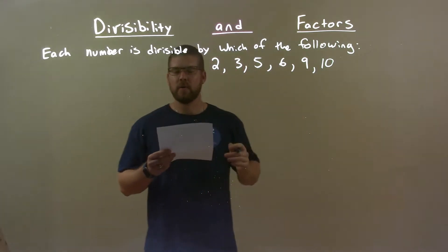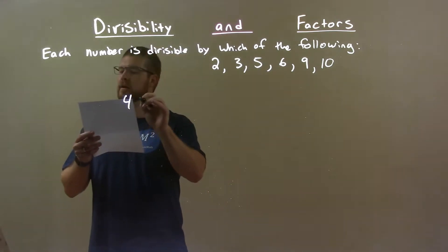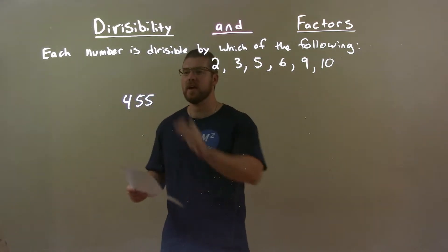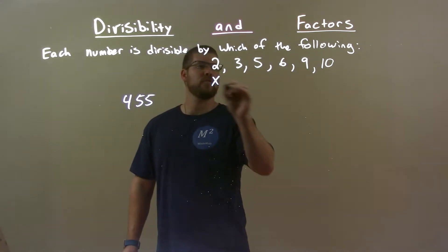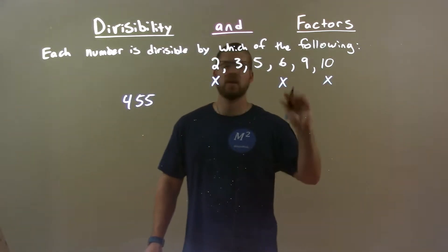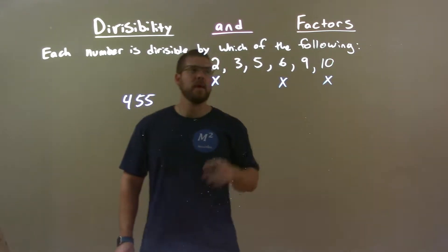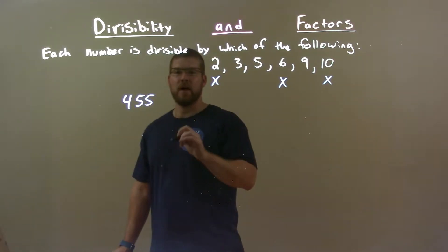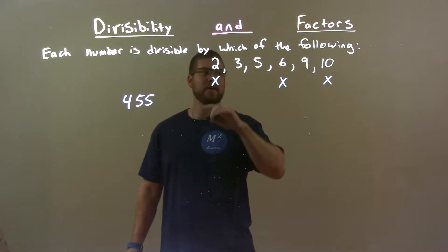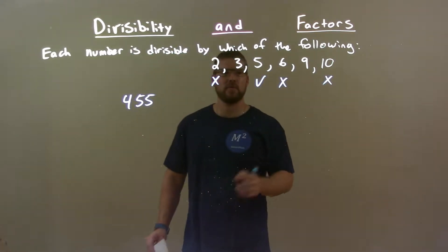So if I was given this number, 455. First thing, this is an odd number. 2, 6, and 10 are out. Even numbers cannot go into an odd. Now we know this number ends in a 5 or a 0, so 5 goes into it. So we're good with 5. 5 goes into 455.